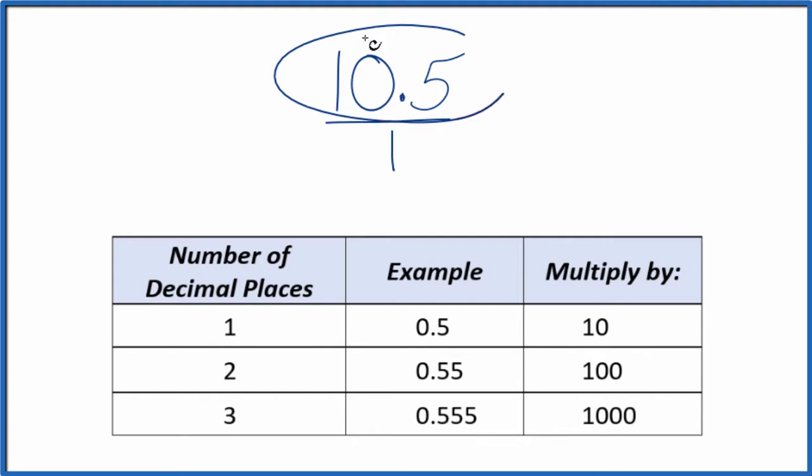We need to get this 10.5 to be a whole number, and to do that I can see there's one decimal place. We multiply the numerator here by 10. So 10 times 10.5, that ends up equaling 105, and that's the whole number.